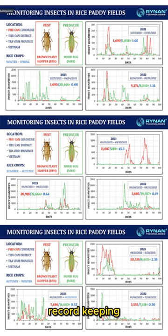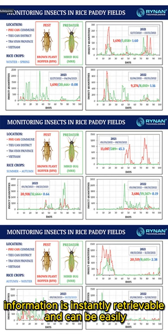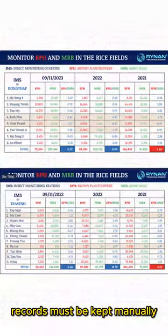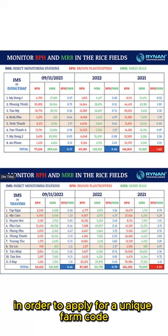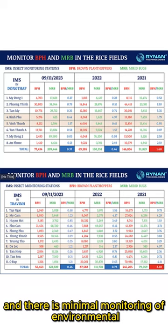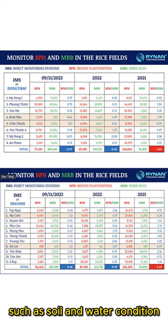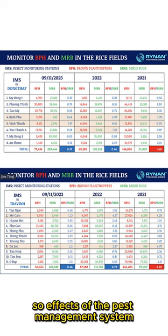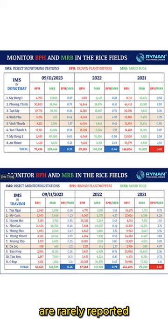Record-keeping and evaluation of effectiveness. Information is instantly retrievable and can be easily converted to visual graphs for analysis and comparison. Records must be kept manually in order to apply for a unique farm code. There is minimal monitoring of environmental measurements such as soil and water condition, so effects of the pest management system are rarely reported.